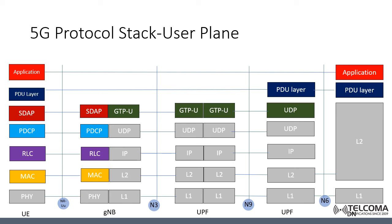The new layer, SDAP — Service Data Adaptation Protocol — has many services and functions. For example, it performs mapping between the quality of service flow and the data radio bearer. It also marks the quality of service flow on downlink and uplink packets. Additionally, a single protocol entity of SDAP is configured for each individual PDU session.